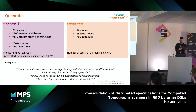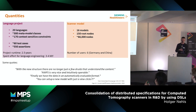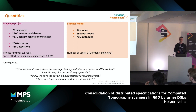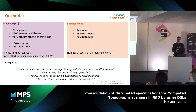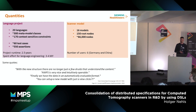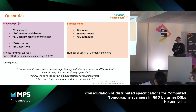Some words about the quantity. On the language side we have about 20 languages, 300 metamodel classes — meaning concepts, editors, and so on — 170 context-sensitive constraints, 60 test cases, and 550 assertions. The current project runtime is two and a half years with an effort of about three to four man-years. The concrete scanner model instance consists of 16 models, 150 root nodes, and — I think that's the important number — 66,000 single nodes.